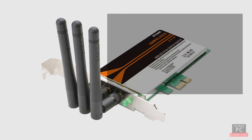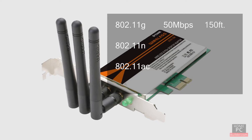Wireless adapters come in either 802.11G, N, or AC specifications. The G-spec runs at speeds of around 50 megabits per second with approximately 150 feet of range. The N-spec runs at up to 300 megabits per second with 300 feet of range. The AC-spec runs at up to 1300 megabits per second with greater than 300 feet of range.